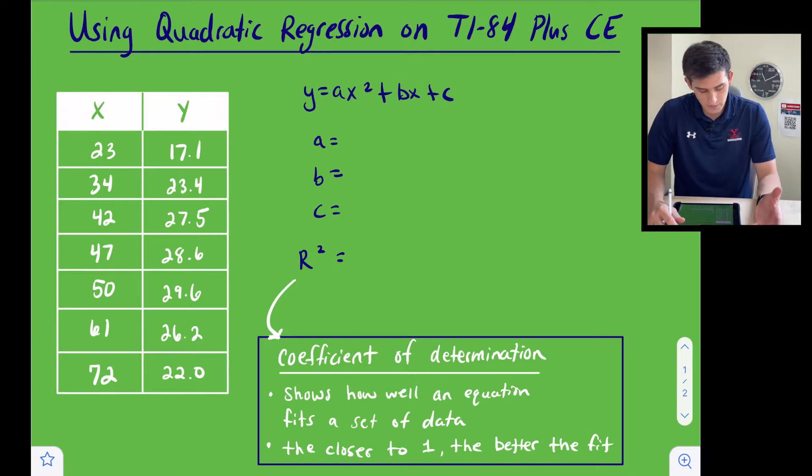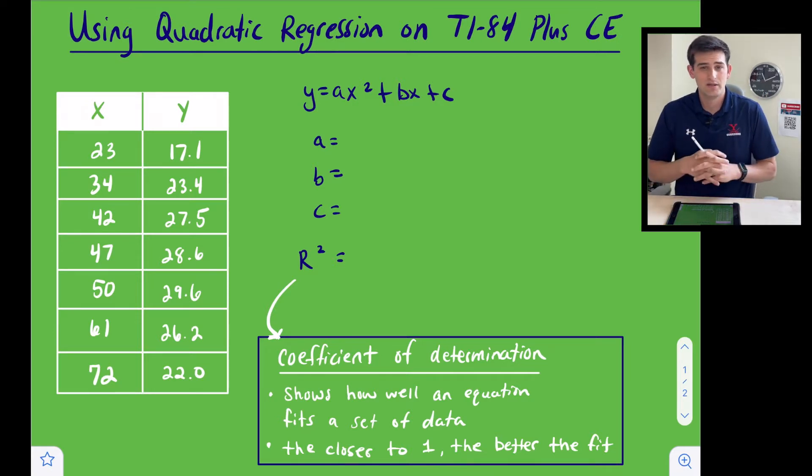So we're going to start off with a table of x and y values that we see on the left side of our screen right here. We're going to use our calculator to find the equation, basically the line of best fit if we think back to linear regression, but this is going to be our quadratic best fit.